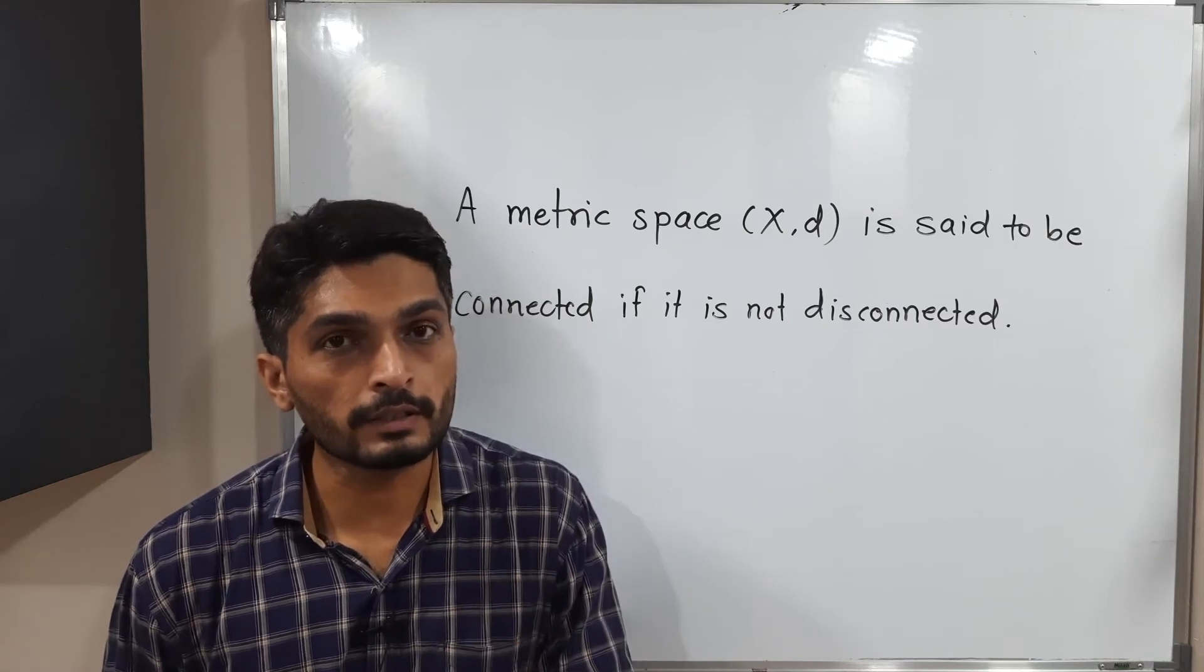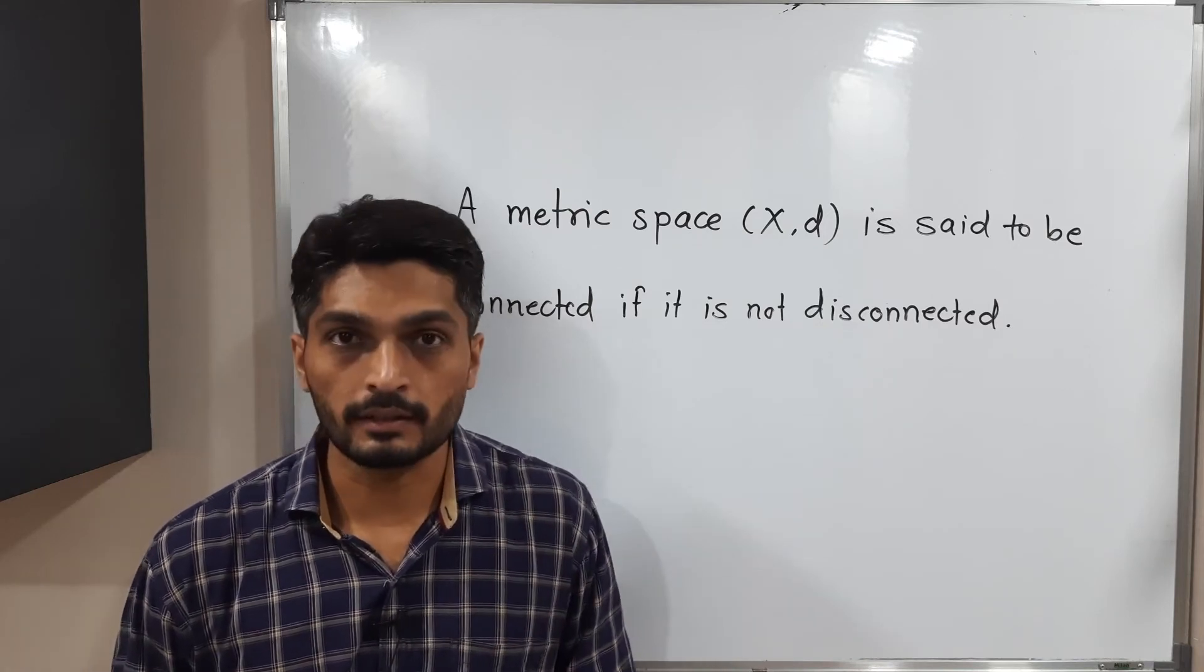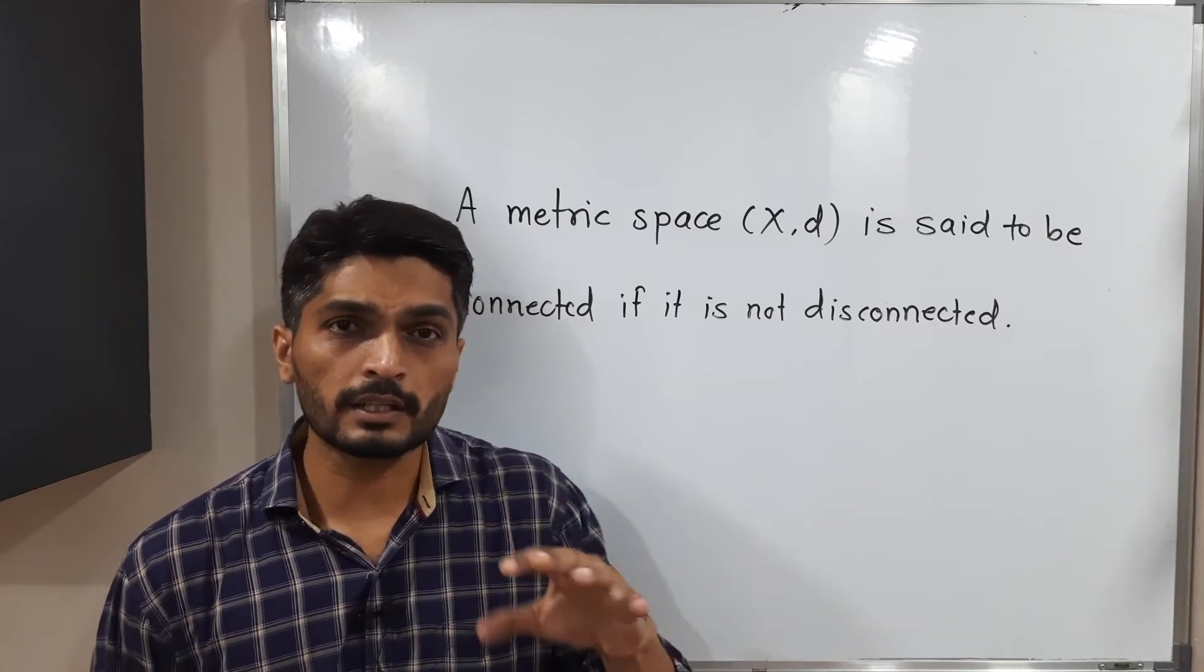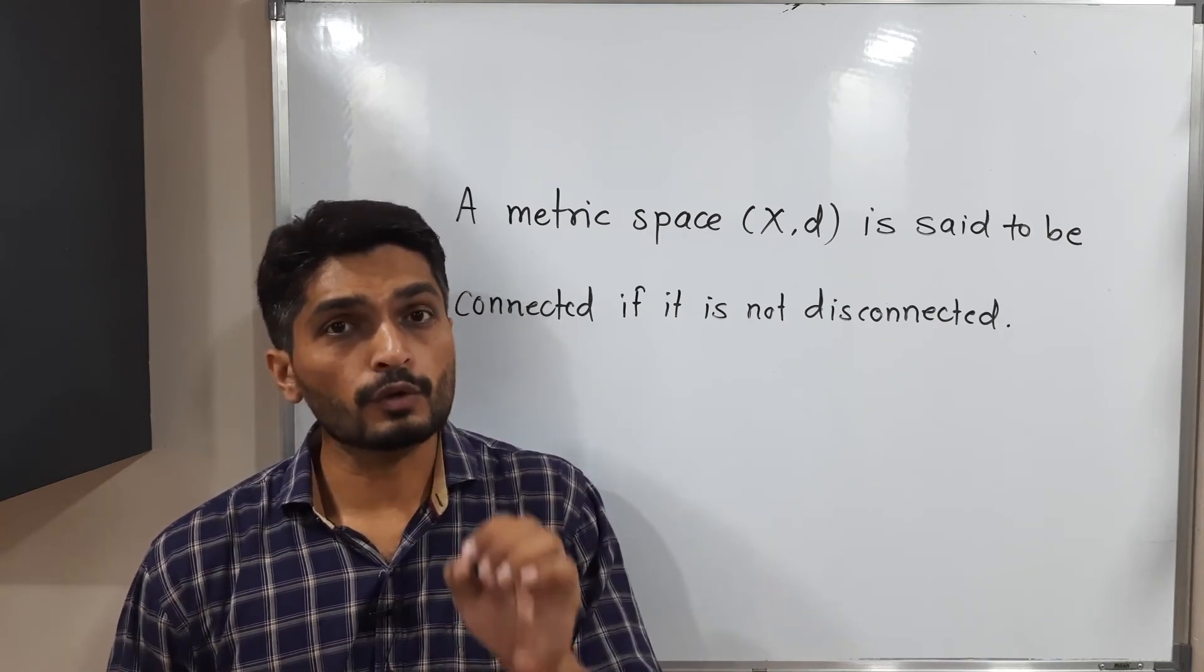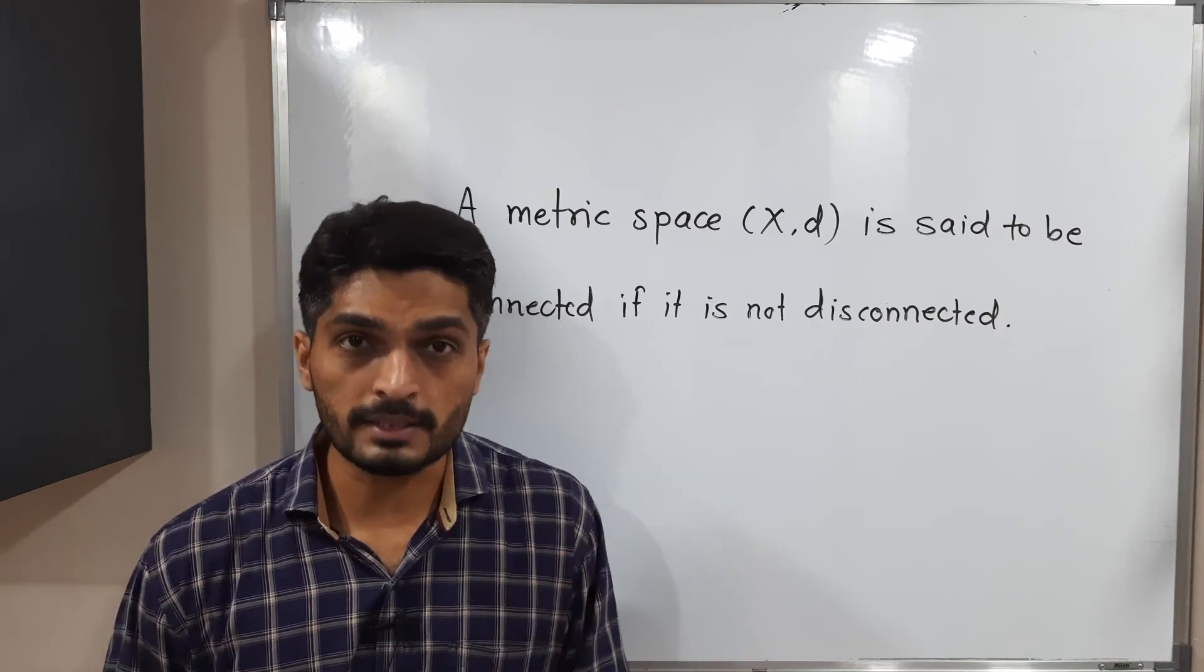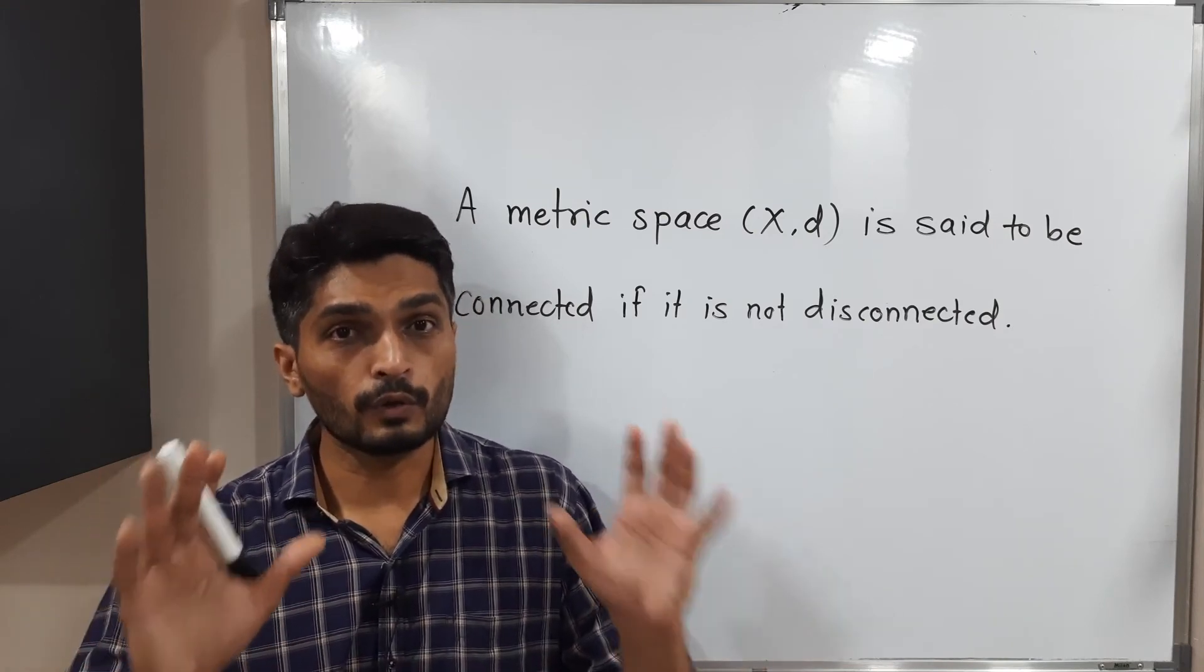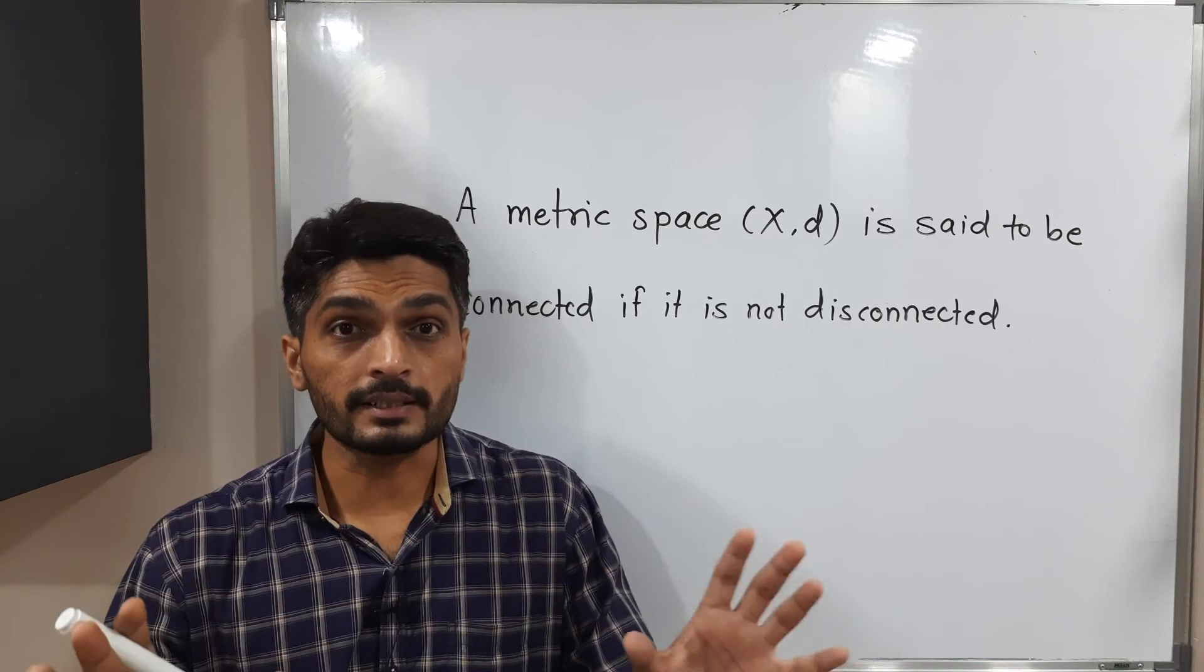Definition of disconnected metric space we have already seen. The same definition we can express in another way like this. If it is not possible to express a given metric space as a union of two non-empty separated sets,